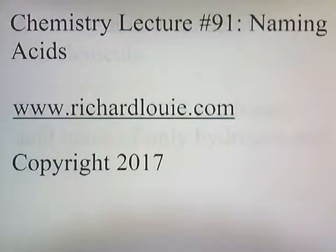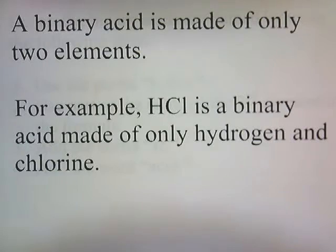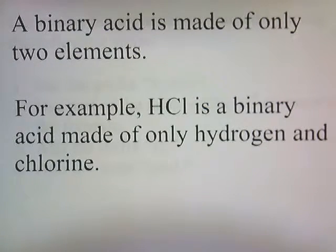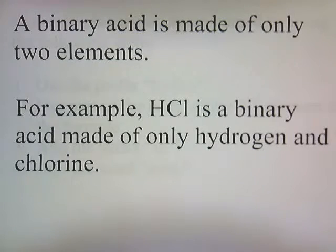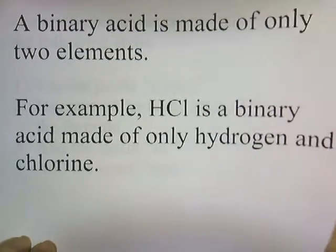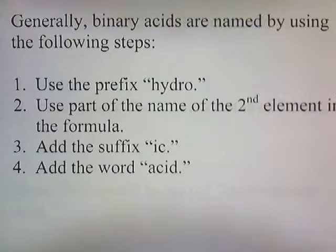Chemistry Lecture Number 91: Naming Acids. A binary acid is made of only two elements. For example, HCl is a binary acid made of only hydrogen and chlorine. Generally, binary acids are named using the following steps.